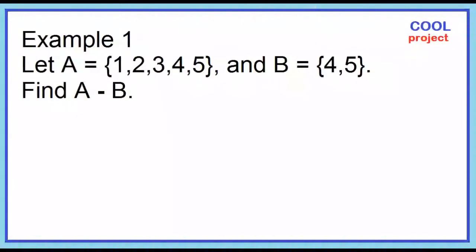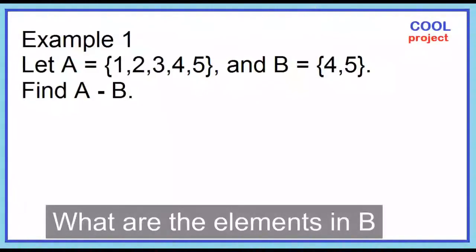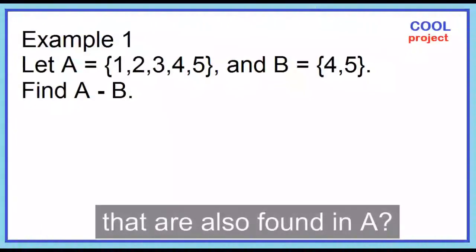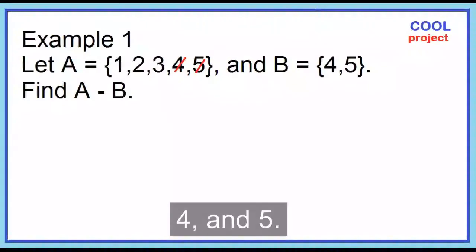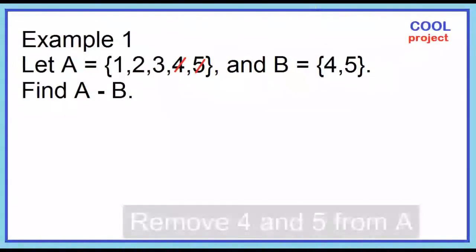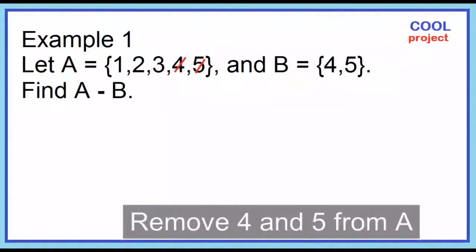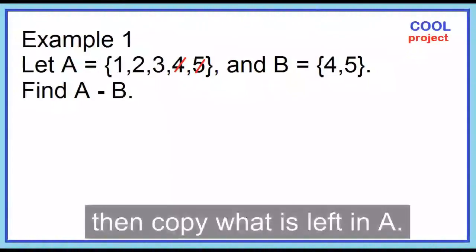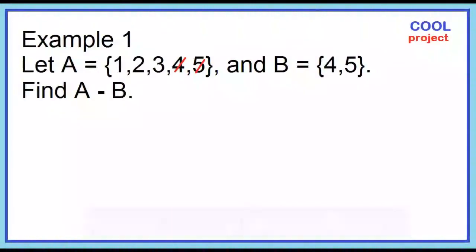Example number 1: Given set A and set B, find A minus B. What are the elements in B that are also found in A? 4 and 5. Remove 4 and 5 from A, then copy what's left in A.